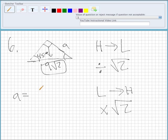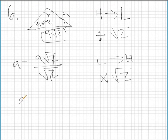So what we want to do is A is going to equal 9 root 2 divided by root 2. And what happens here is luckily these things cancel out, and what we get is A equals 9.